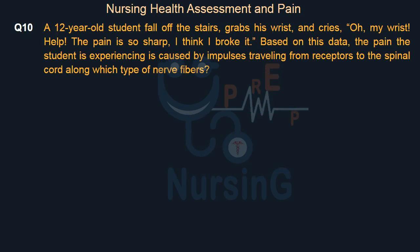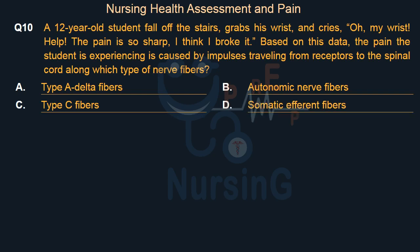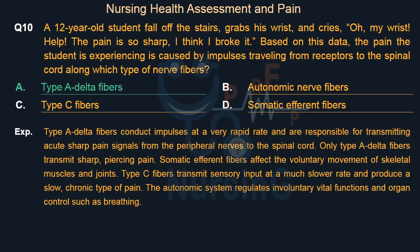A 12-year-old student falls off the stairs, grabs his wrist, and cries, 'Oh, my wrist! Help! The pain is so sharp, I think I broke it.' Based on this data, the pain the student is experiencing is caused by impulses traveling from receptors to the spinal cord along which type of nerve fibers? Option A: Type A delta fibers. Option B: Autonomic nerve fibers. Option C: Type C fibers. Option D: Somatic efferent fibers. The right answer is Option A: Type A delta fibers.